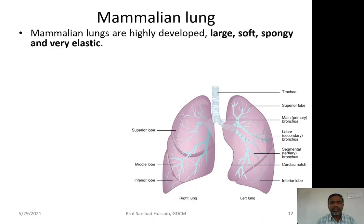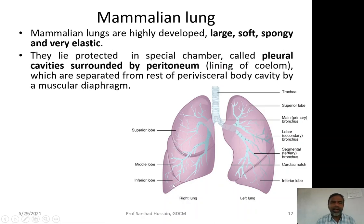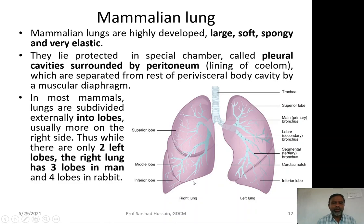Mammalian lungs are highly developed. They are large, soft, spongy, and very elastic — they can contract and relax. They lie protected in a special chamber called the pleural cavity, surrounded by peritoneum, which is the lining of the coelom. The lungs are separated from the perivisceral body cavity by a muscular diaphragm.